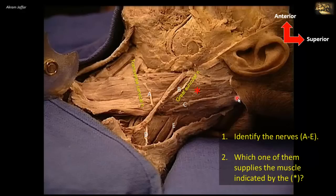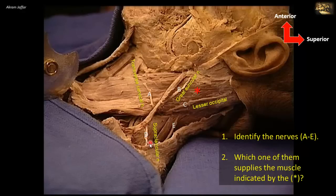C, the lesser occipital nerve, passes behind the auricle and supplies part of the skin behind it. D is actually a group of nerves — the supraclavicular nerves — which go downward to the tip of the shoulder and supply the skin over the shoulder and the upper half of the deltoid muscle. Note that the external jugular vein descends vertically downwards over the obliquely running sternocleidomastoid muscle.